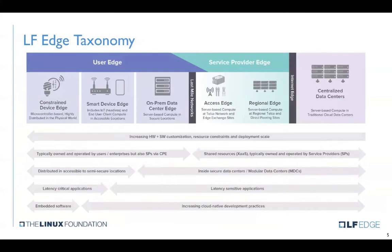I recommend checking out a taxonomy white paper that we did as a community earlier this summer. Edge computing is very confusing to a lot of people because you have to recognize that it's a continuum — it's not just about thin edge and thick edge and near edge and far edge. There are actually many different edges that have technical tradeoffs between why you would run compute in a certain location, for various reasons: autonomy, bandwidth, latency, security, and privacy. If you focus on technical tradeoffs, as this white paper goes into in great depth, you're always right versus relying on ambiguous terms.